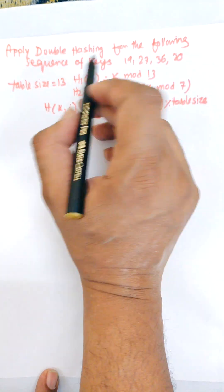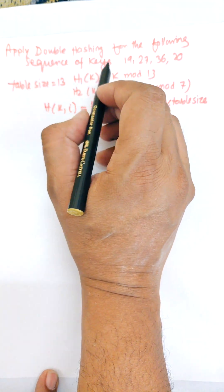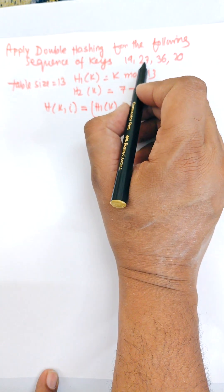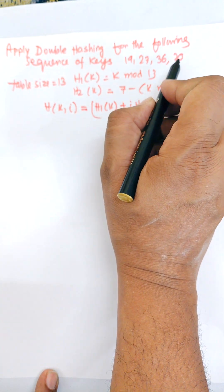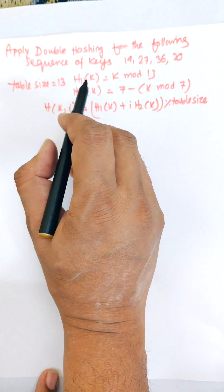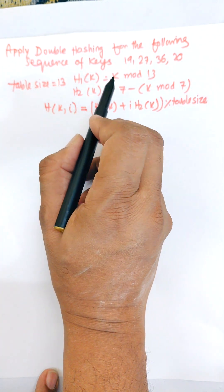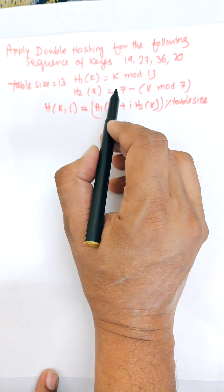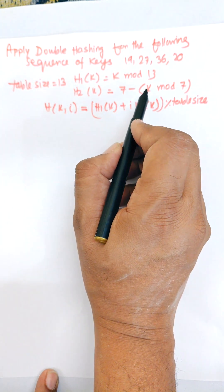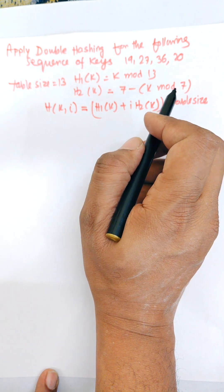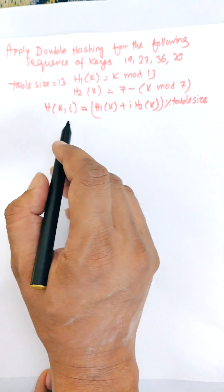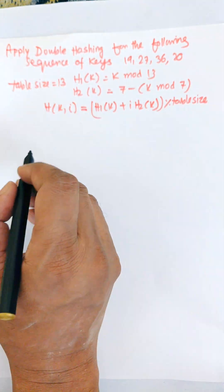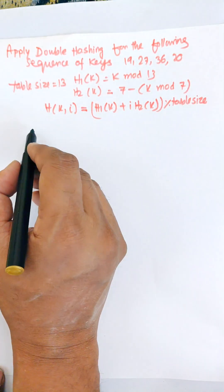We need to apply double hashing for the following sequence of keys: 19, 27, 36, 3, 20. Table size is equal to 13. Here h1(k) = k mod 13 and h2(k) = 7 minus k mod 7. These are given and we need to apply double hashing.